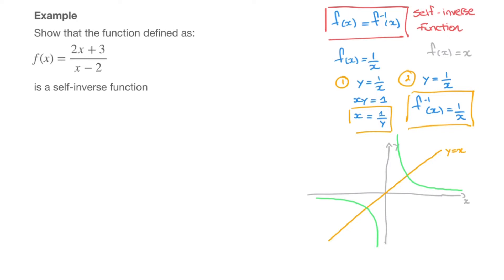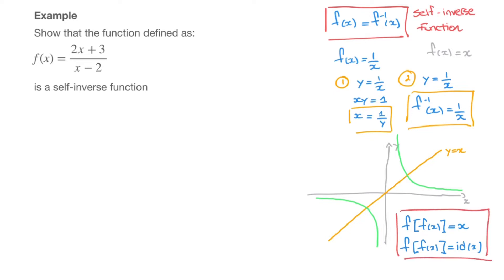Before I work through this example, one more important thing needs to be said. Given a self-inverse function, the following will always be true: the composite of f with itself, so f of f of x, will equal x. Another way of writing that is that the composite of f with f of x is equal to id of x, known as the identity function. This result is often used in exams to show that a function is a self-inverse function.